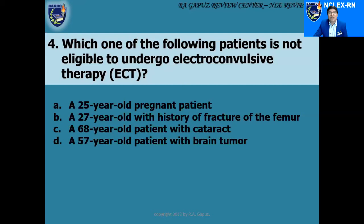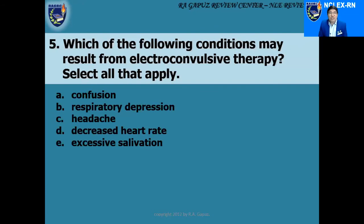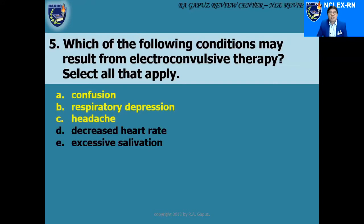Which patient is not eligible for ECT? Any patient with conditions that could increase intracranial pressure should not undergo ECT. The answer is a 57-year-old patient with a brain tumor. Which conditions may result from ECT? Complications include confusion, respiratory depression, and headache. Decreased heart rate does not occur — in fact, atropine sulfate administered prior to ECT can increase heart rate. Due to the drying effect of pre-ECT medications like atropine sulfate, the patient will have dry mouth, not excessive salivation.